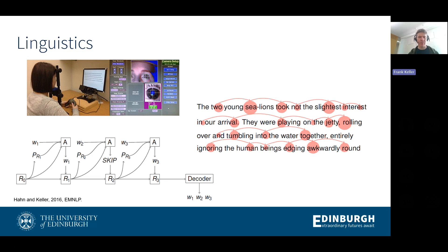It's actually quite a complicated process. We can study it using an eye tracker and build models. This is from my own work — a simple recurrent network with an attention component, trained using reinforcement learning, that acquires from a large amount of text behavior that looks quite similar to human eye movements. That's again an example of a cognitive scientist who wants to study a behavior experimentally, but also model and predict it using computational techniques.